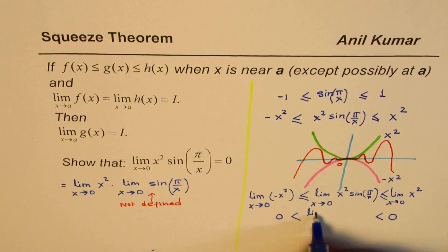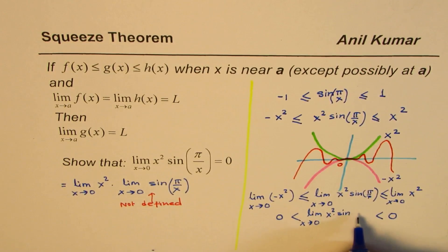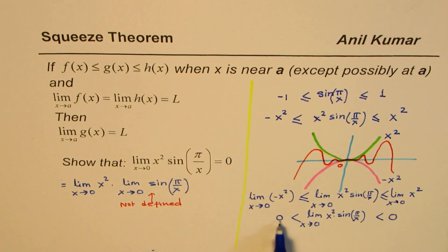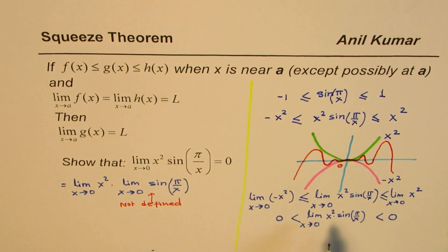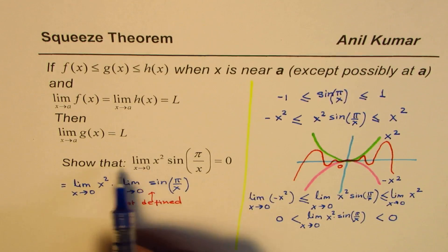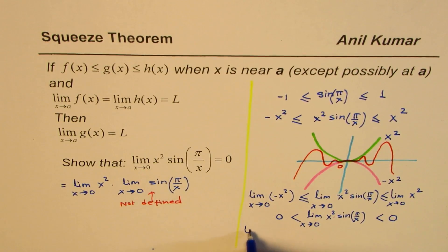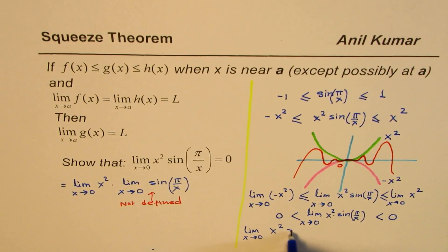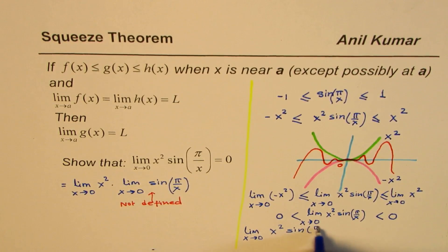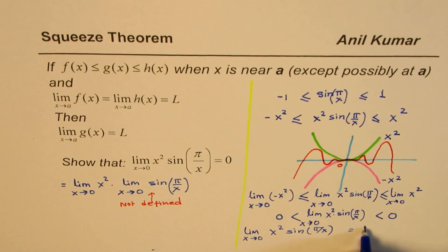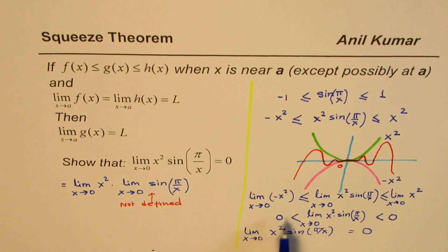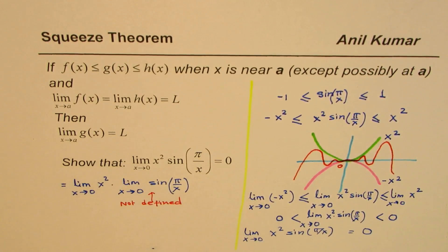Therefore, the limit when x approaches 0 for x² times sin(π/x) should also be what? Should also be 0. So the value between these two values is L.